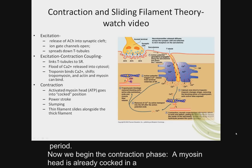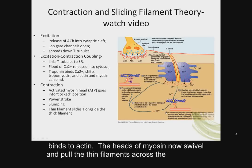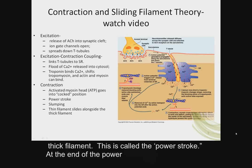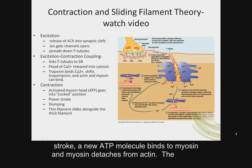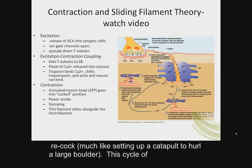Now we begin the contraction phase. A myosin head is already cocked in a high-energy conformation state so that when actin is exposed, it swings its heads up and binds to actin. The heads of myosin then swivel and pull the thin filaments across the thick filament — this is called the power stroke. At the end of the power stroke, a new ATP molecule binds to myosin and myosin detaches from actin. The myosin ATPase will cleave the ATP and the energy released will cause the myosin head to re-cock, much like setting up a catapult to hurl a large boulder.